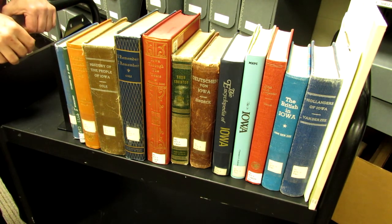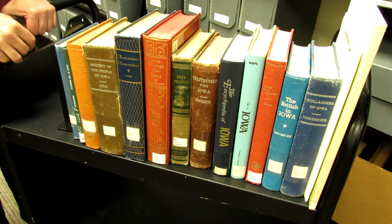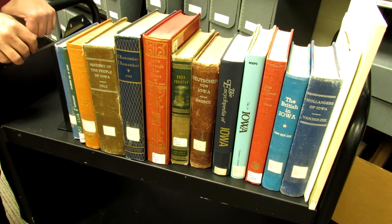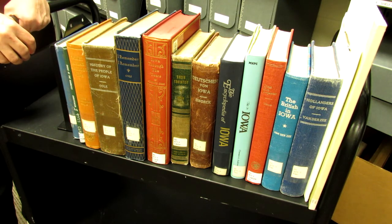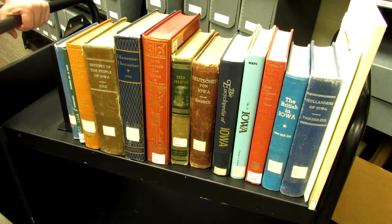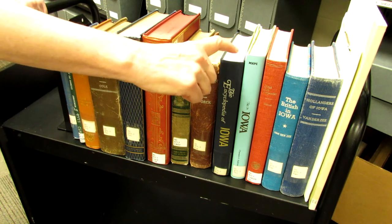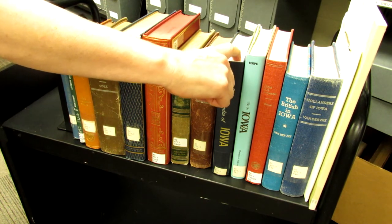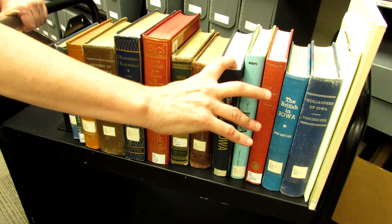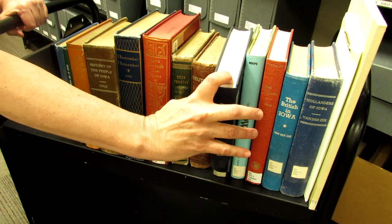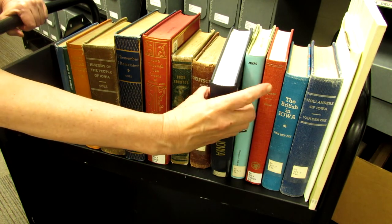Special Collections researchers may select books from the open stacks without staff assistance. Here's how to remove them safely from the shelves. You'll place your finger on the pages beyond the spine and tip the book gently forward so you can grasp both sides.